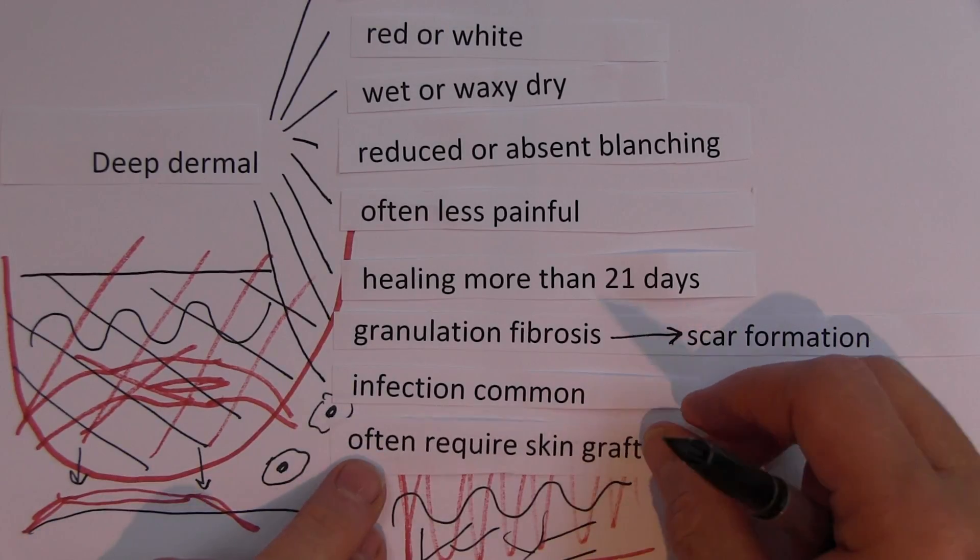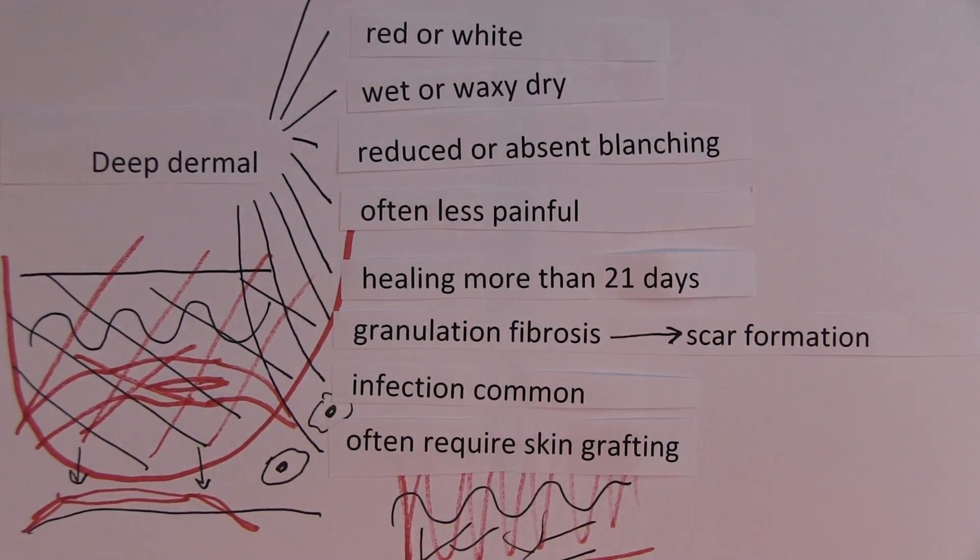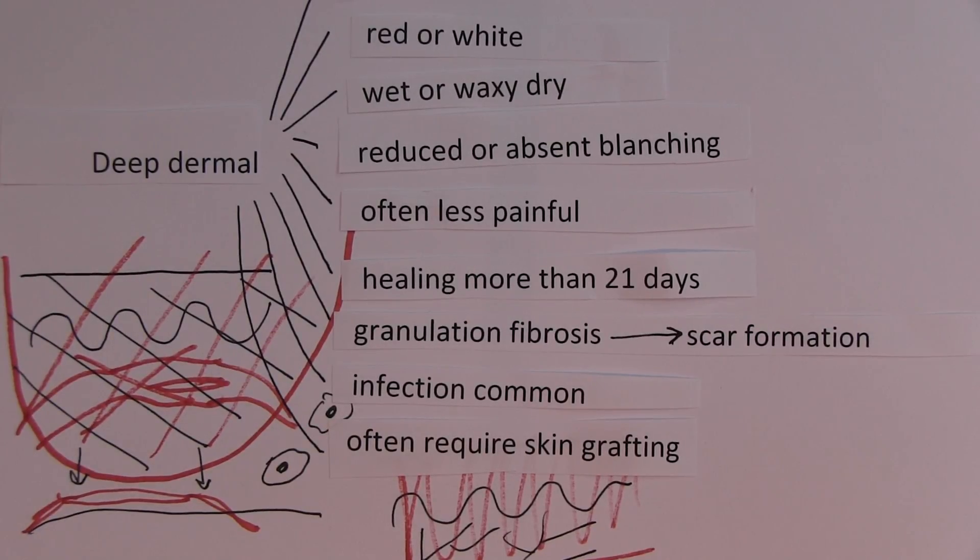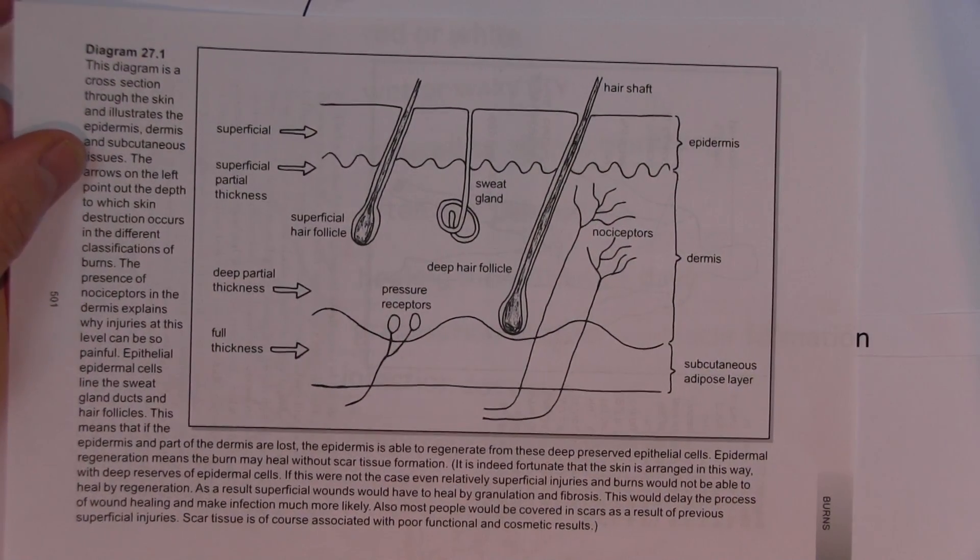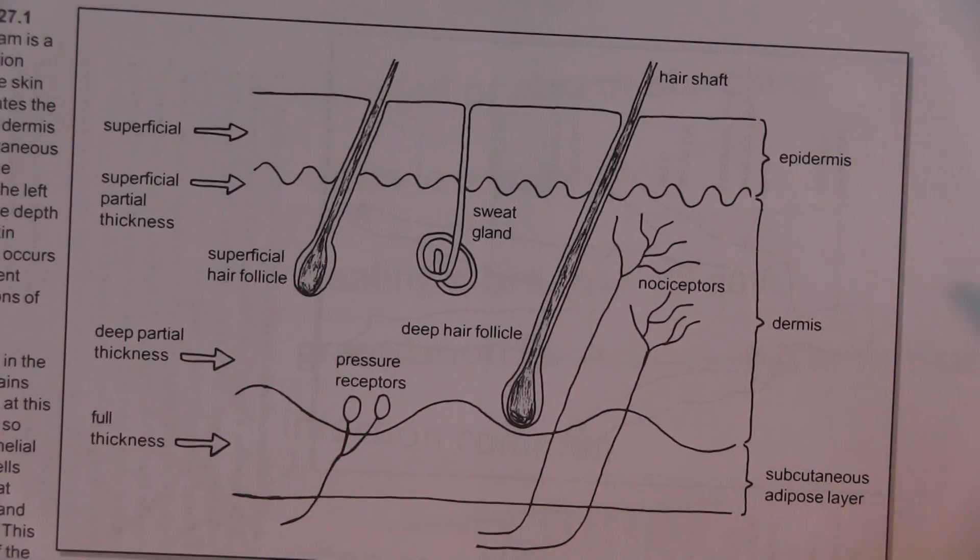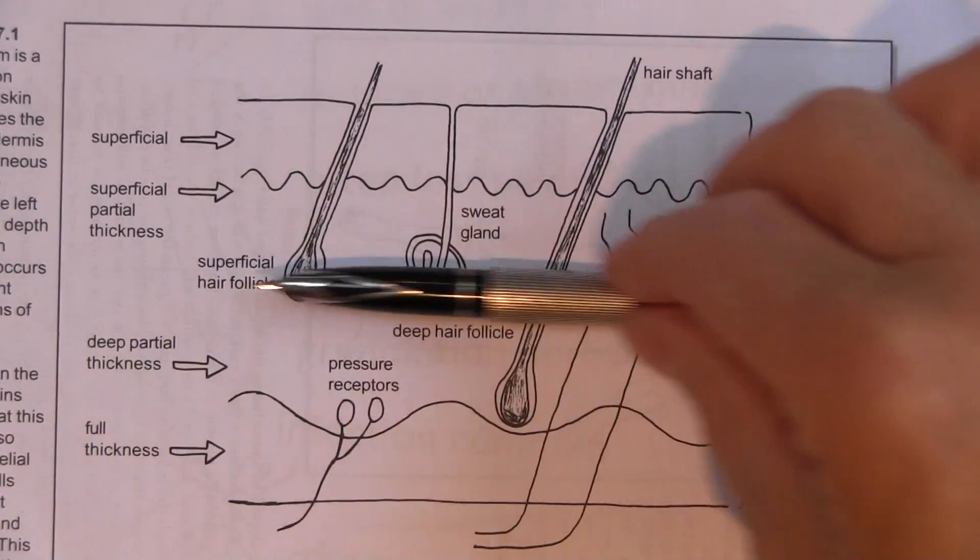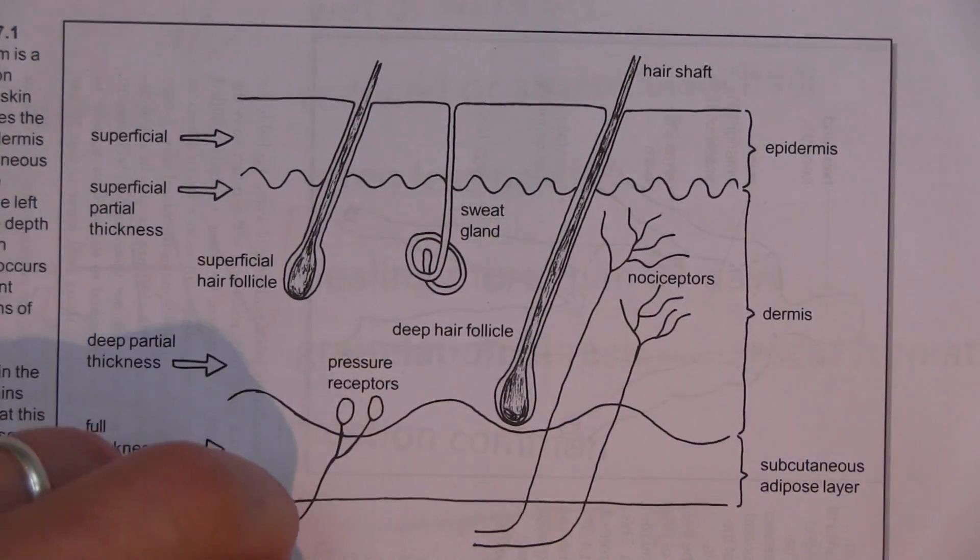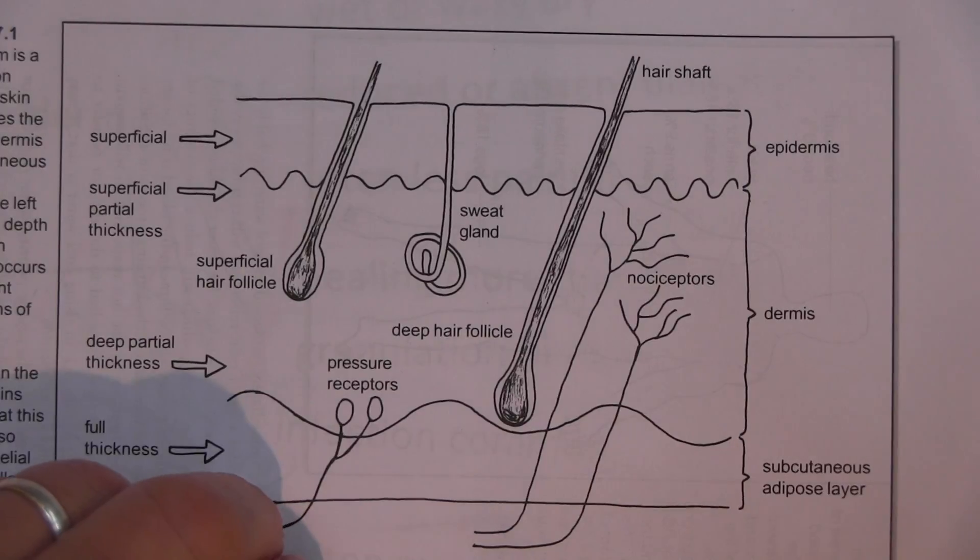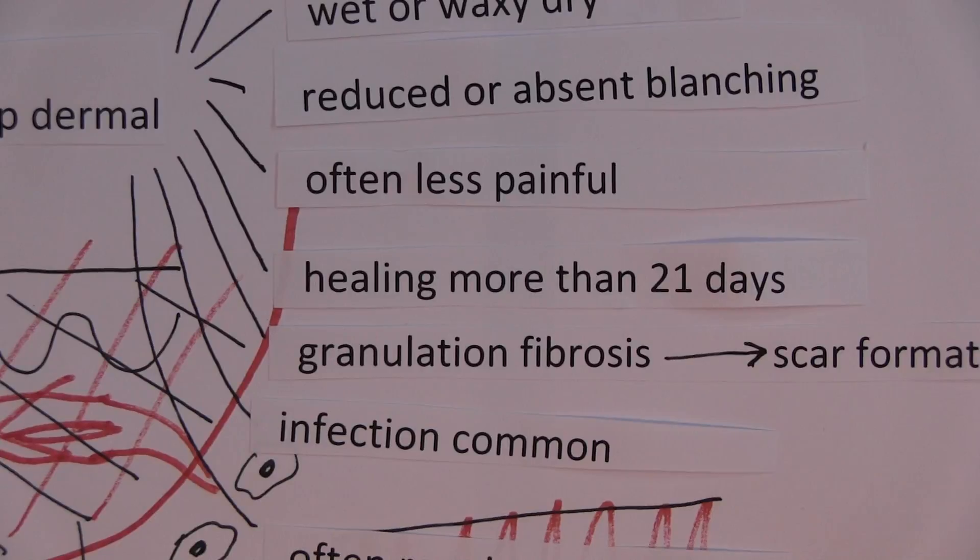So very often what we're doing in plastics units or burns units is skin grafting, split skin grafting. So in a split skin graft, healthy skin will be shaved off from a part of the body. Split skin graft, splitting the dermis. This top part will be taken and grafted onto the damaged burn, and very often you get very good results with this, as long as the recipient area is well prepared.